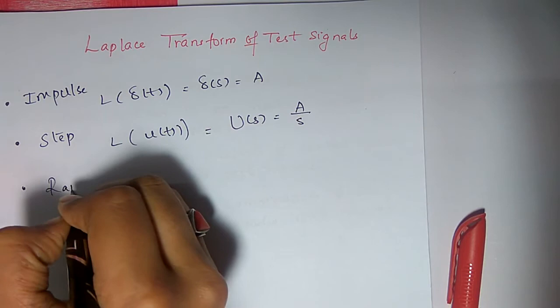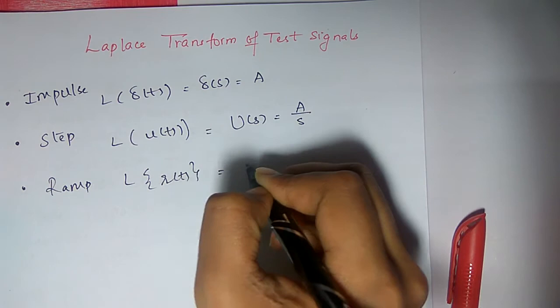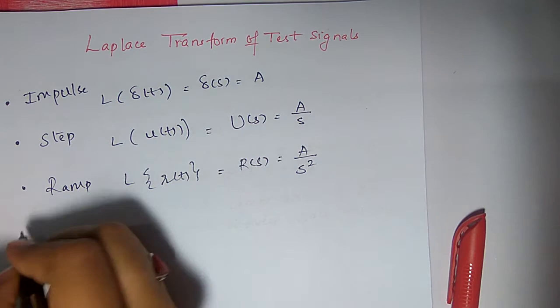Next is ramp. Laplace of r of t is r of s equals to a by s square.